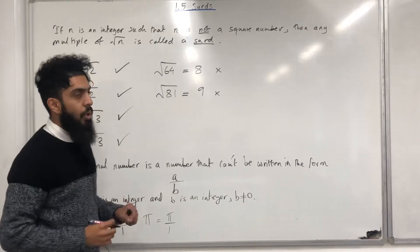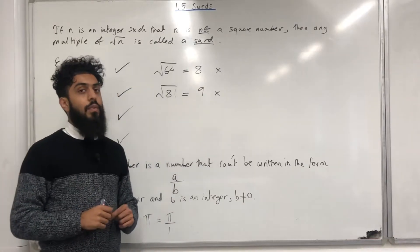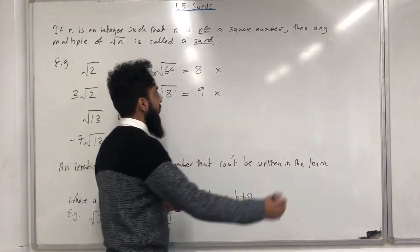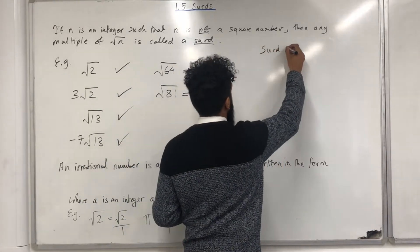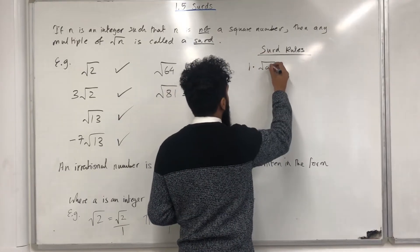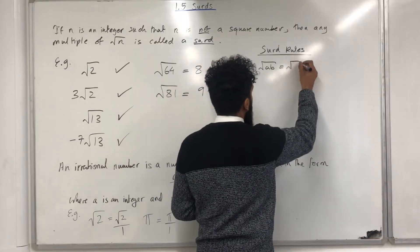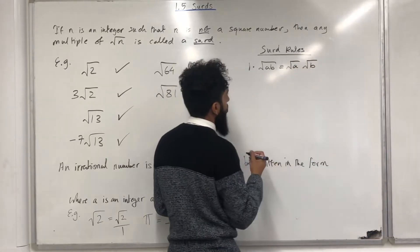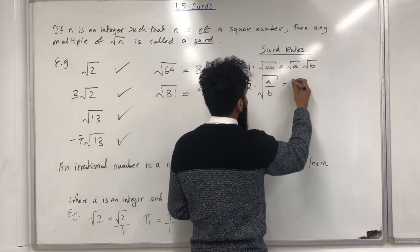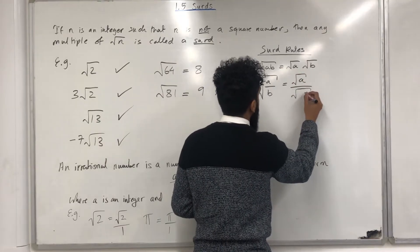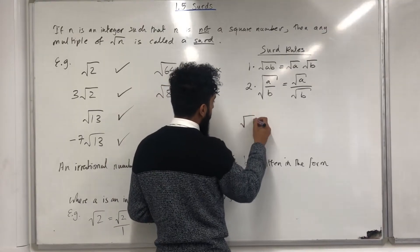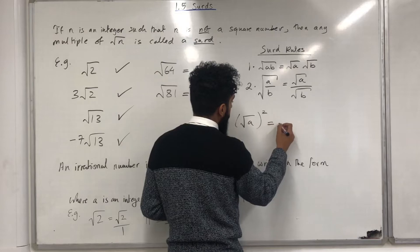Now I'm going to go through surd rules. There are two major rules that you need to know for the exam. The first one is the multiplication rule, and the second one is the division rule. Rule number 1: the square root of ab is equal to the square root of a multiplied by the square root of b. Rule number 2: the square root of a over b is equal to square root of a divided by square root of b. In general, if you take the square root of a and you square it, this is equal to a.